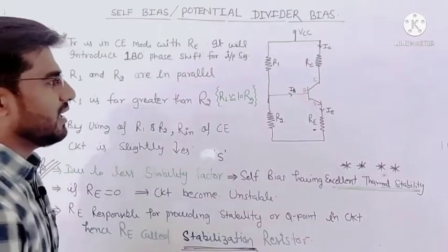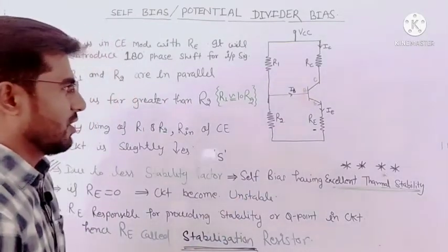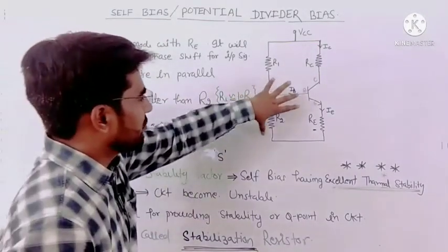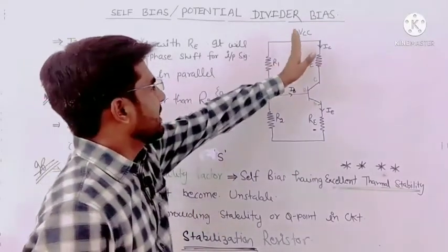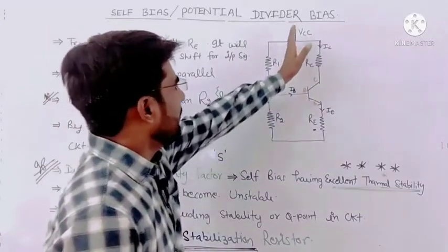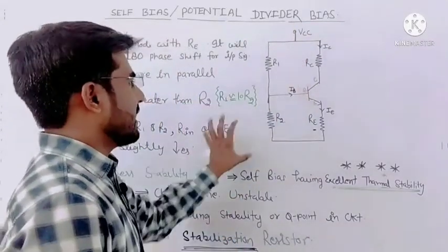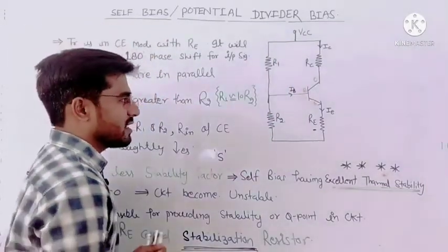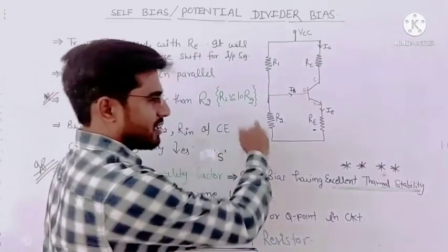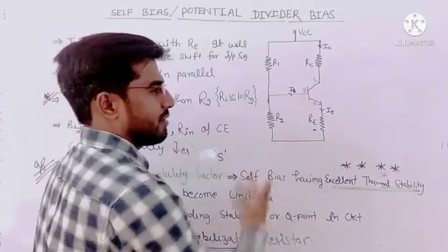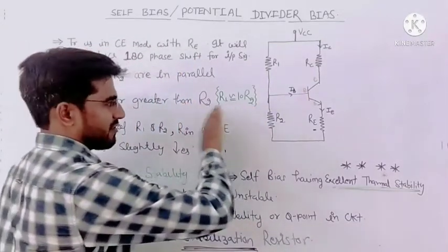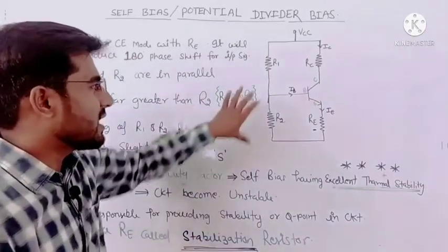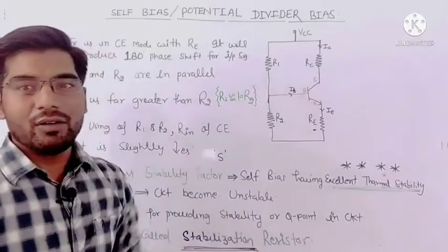Now we need to calculate and simplify the circuit. The circuit currently looks complicated, but after simplifying we will solve it easily. We will break the circuit where R1 and R2 are, and convert the input side resistances and voltages into Thevenin resistance (RTH) and Thevenin voltage (VTH).